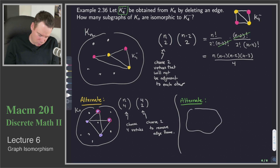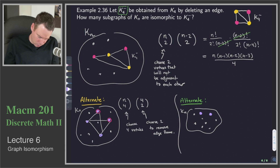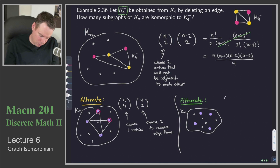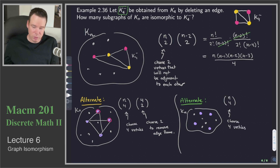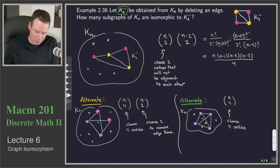Maybe another alternate solution, just so we can get a feel for all the different ways there are to solve a problem like this. Again, we've got a whole bunch of vertices in Kn. I can make that same first choice — select the four vertices we're going to use: one, two, three, four. That's our n choose 4. Once we've selected those four vertices, they make a K4 subgraph. How many edges are there? There are six edges in that K4 subgraph.